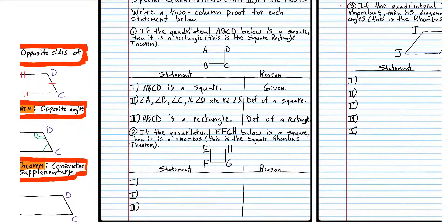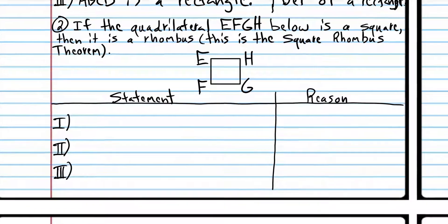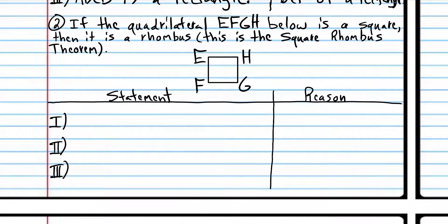I want you to try number two. You're going to need those definitions right in front of you, so be sure to have those. Go ahead and try number two, and when you come back, we'll do it together. We'll start with the given information: EFGH is a square. That's given.